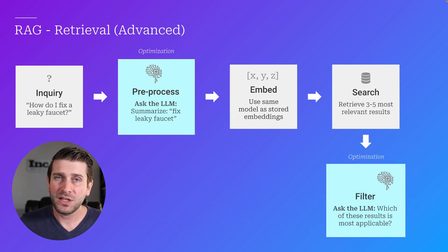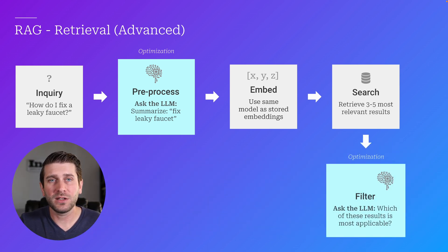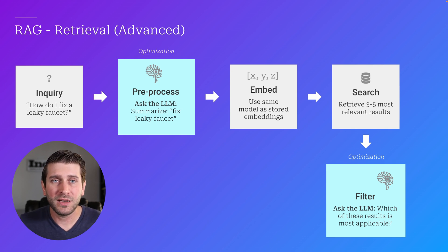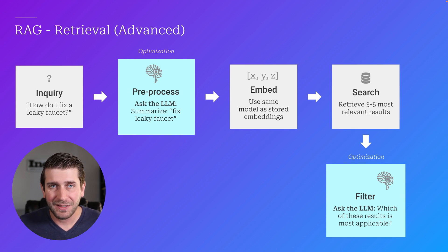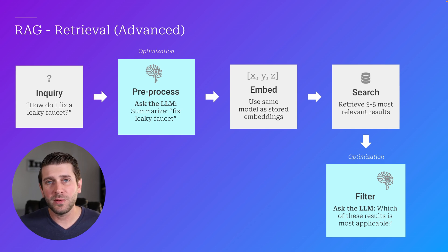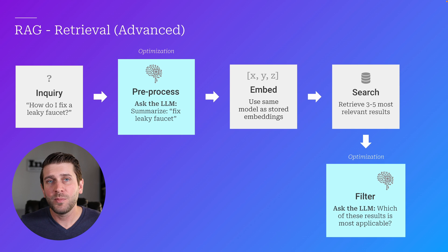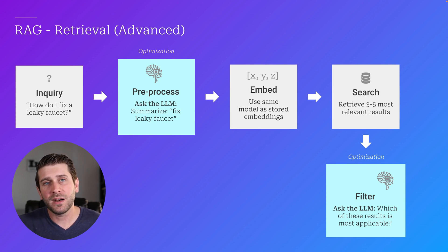But before we just pass the results directly into the large language model for generation, we might use an LLM again to say: which of these results is most applicable? Because if we're feeding the model bad information, its answer is going to be off-topic or wrong. So if we do an intermediate step where we ask the LLM to pick the most applicable results first, we can be more confident that our model is going to be using the right information.